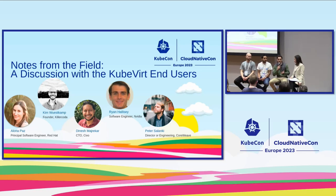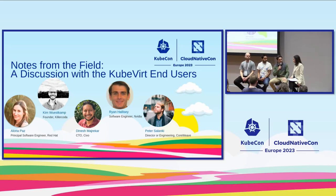NVIDIA deploys vanilla Kubernetes with no fork, and for KubeVirt they deploy and manage it themselves using existing operator tooling to roll out, deploy, and upgrade. They do have a fork of KubeVirt based on version 0.50. Most zones run Kubernetes 1.23 and they're moving to 1.26, and moving from KubeVirt 0.50 to 0.59.